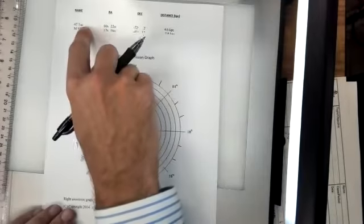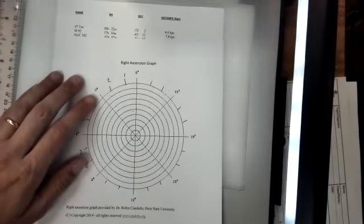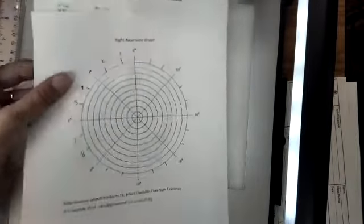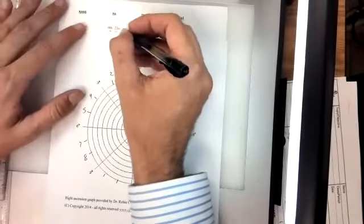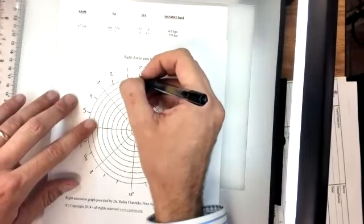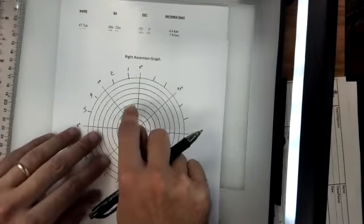How do you plot an object like 47 Tugany, which has a right ascension of zero hours and 22 minutes? So zero hours is here, 22 minutes is a fraction of an hour, right? And so 30 minutes would be exactly halfway. So 22 minutes is a little bit less than halfway. Let your eyes adjust. There they go. So 22 minutes would be about here.